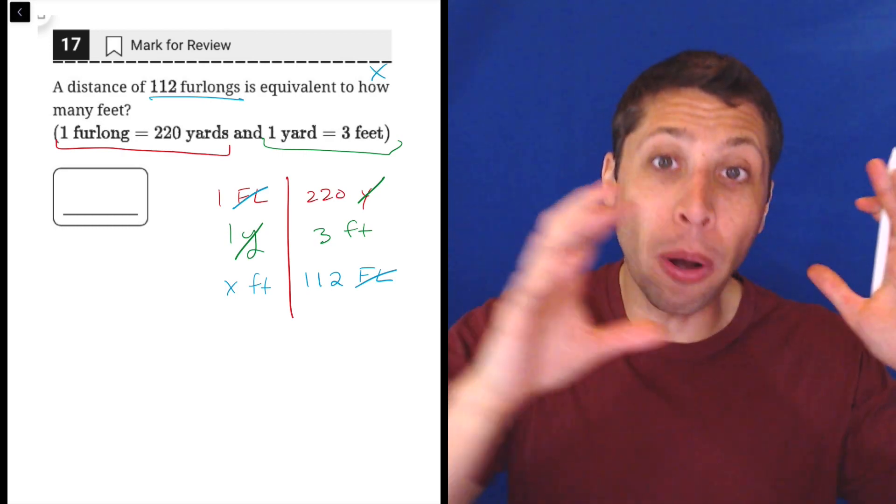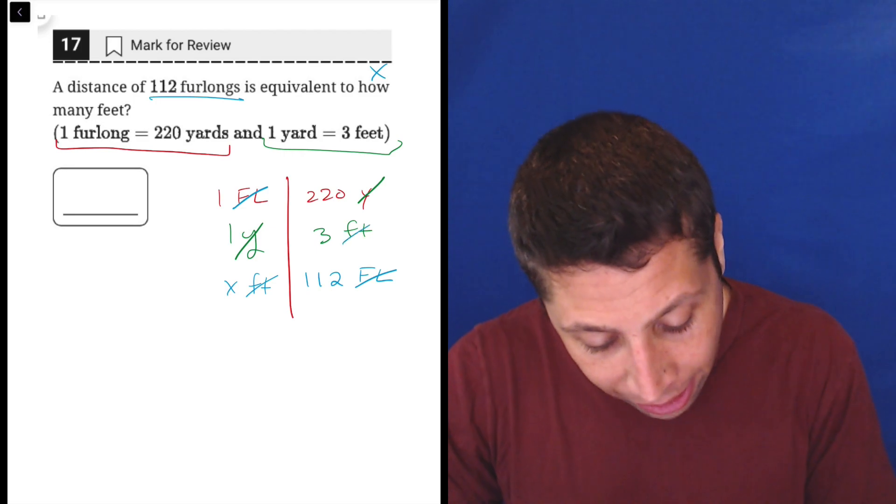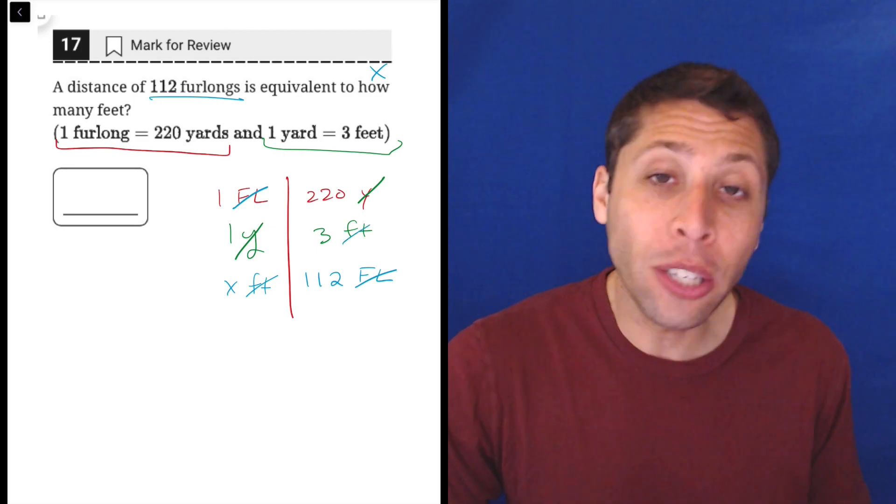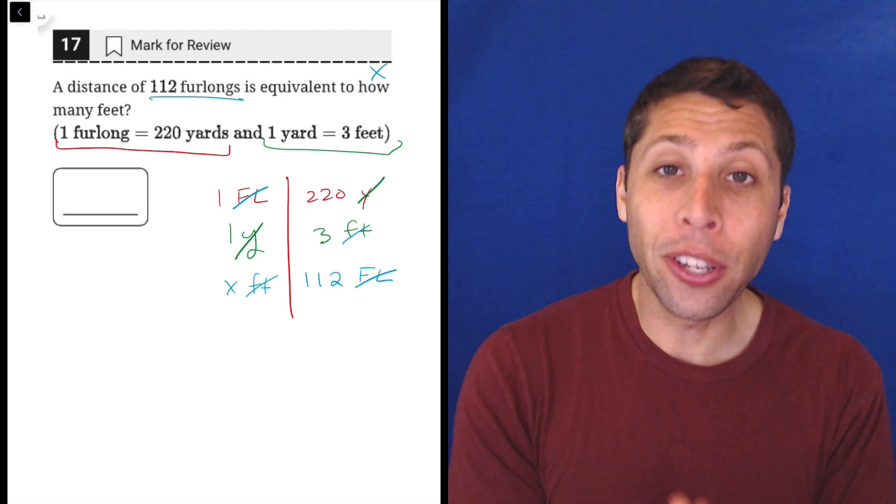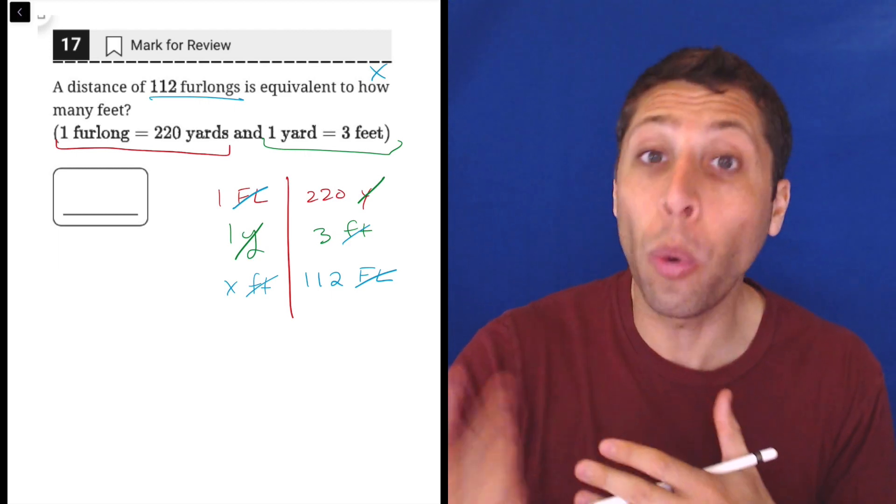And when I do that, when I include both the furlongs and the feet, not only do I have a complete row, but now feet get canceled out as well. And look, all my units are gone. Now I know that I've got everything in the right place and I'm about to do the right math.